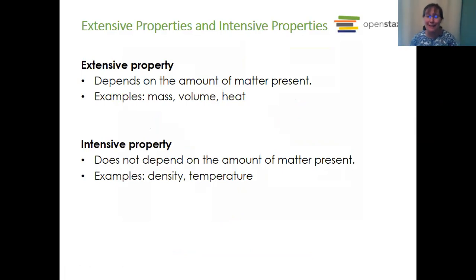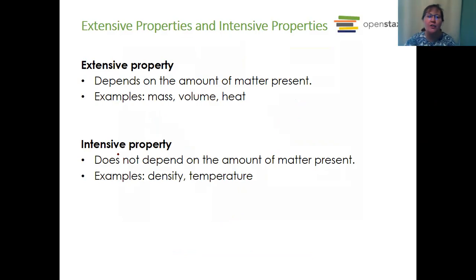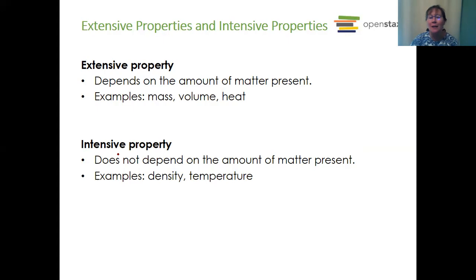In Chapter 1 there's a lot of terminology to understand — some other chapters have very little terminology and it's all math. Now we have extensive properties and intensive properties. An extensive property is one that depends upon the amount of matter present — like mass, volume, and heat or energy. An intensive property doesn't depend on the amount of matter present — like density. Whether you have a very tiny or very large piece of the same substance, density would be the same. Temperature also doesn't depend on amount — a small bit of water and a large container of water on the counter would have the same temperature.